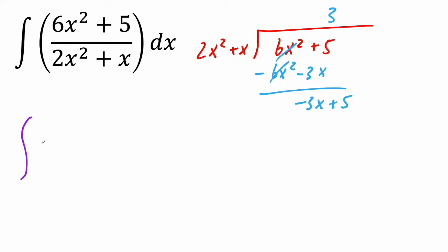So now we can rewrite our integral. So we'll have now 3 plus, in the numerator we're going to have negative 3x plus 5. And in the denominator, because it's a remainder, we're going to have 2x squared plus x, close it, dx.